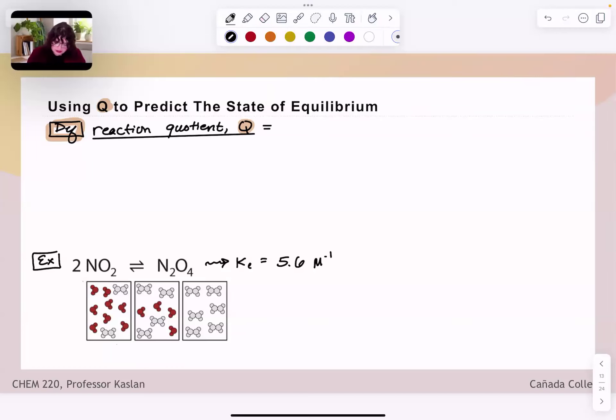The reaction quotient Q is a ratio of product concentration raised to their stoichiometric coefficient, to reactant concentration raised to their stoichiometric coefficient. And the only difference between the reaction quotient and the equilibrium constant is that the reaction quotient is not constant.